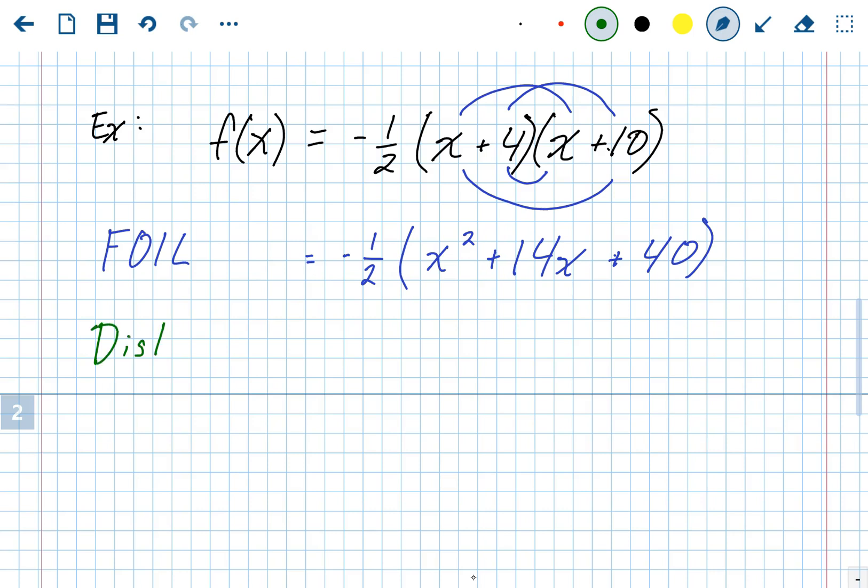All right. Distribute. Distribute the negative 1 half. Negative 1 half times X squared. Negative 1 half times 14X, negative 7X. And negative 1 half times 40 is negative 20. And again, that's it. Now we're in standard form.